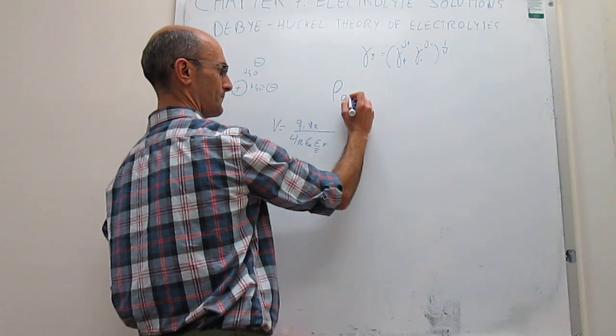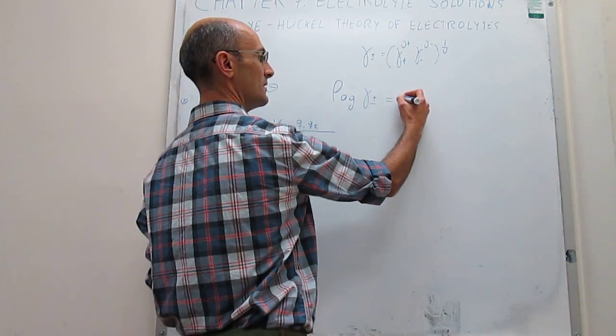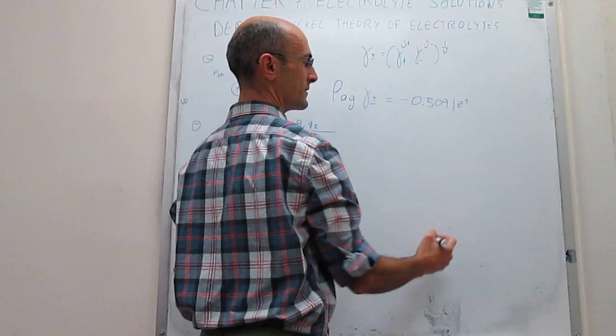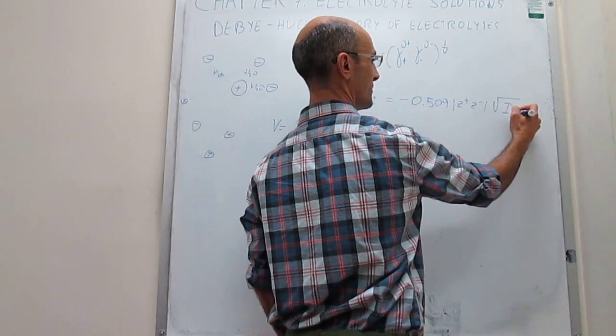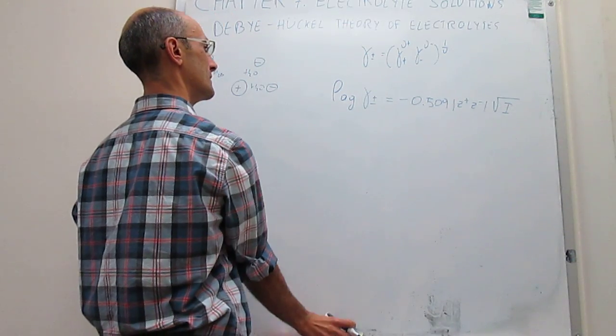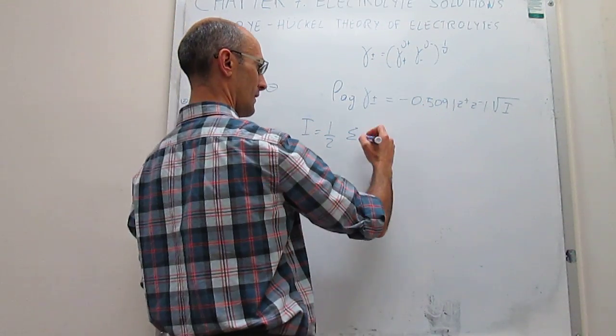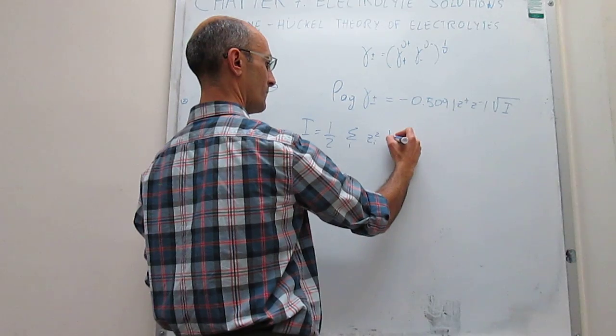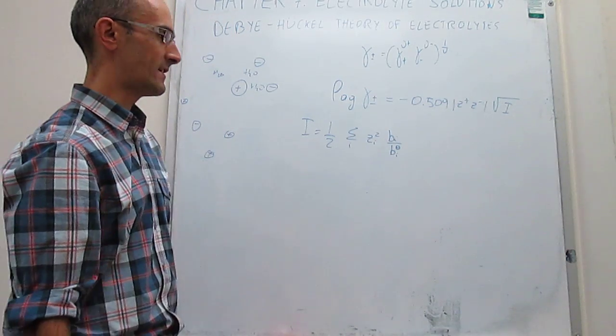The base-10 logarithm of the mean ionic activity coefficient is equal to -0.519 multiplied by the absolute value of the product of the charges of the ions that you are interested in, multiplied by the square root of something that we call the ionic strength. The ionic strength is defined as one-half times the sum of the charge of each of the ions squared, multiplied by the molality of each of the ions over the molality at the standard state.